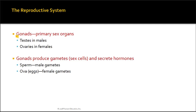The term gonads refers to the primary sex organs in both males and females — that would be the testes in males and the ovaries in females. The purpose of the gonads is to produce what are called gametes, also known as sex cells. In addition, they have another important purpose, which is the secretion of very important hormones, and we'll look at those a little bit later.